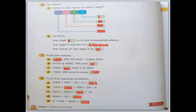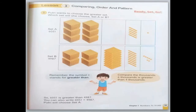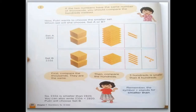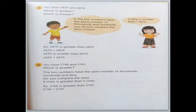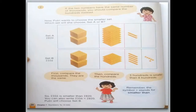We need to go to the comparing section. Remember the symbols: one means greater than, and the other symbol means less than — smaller than. You have to read the symbol carefully. We have 6829 and 6870 — let's go back and review how we compare numbers.